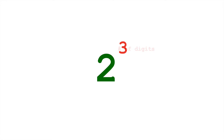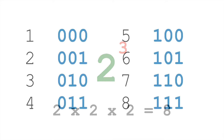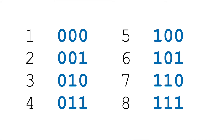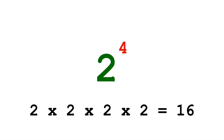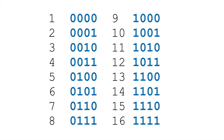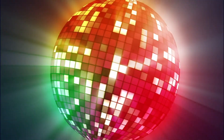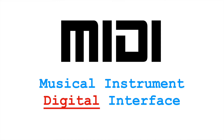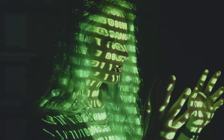So three digits is 2 to the 3rd, which is 8; four digits is 2 to the 4th, which is 16, and so on. MIDI information is transmitted digitally, so all of our musical performance information needs to be represented by these ones and zeros.